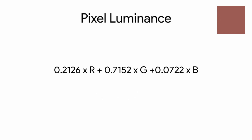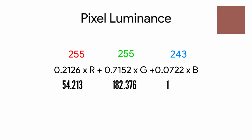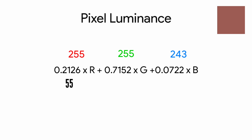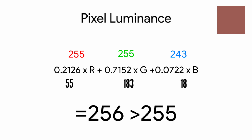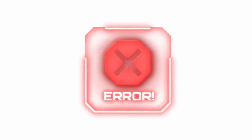The maximum value of this formula can be 255 for Android — that is, Google's color engine. Applying the values of that faulty pixel — 255, 251, 243 — we get these values, but Android rounds them off to 55, 183, and 18, summing up to 256. So just one value greater in one faulty pixel causes the error.